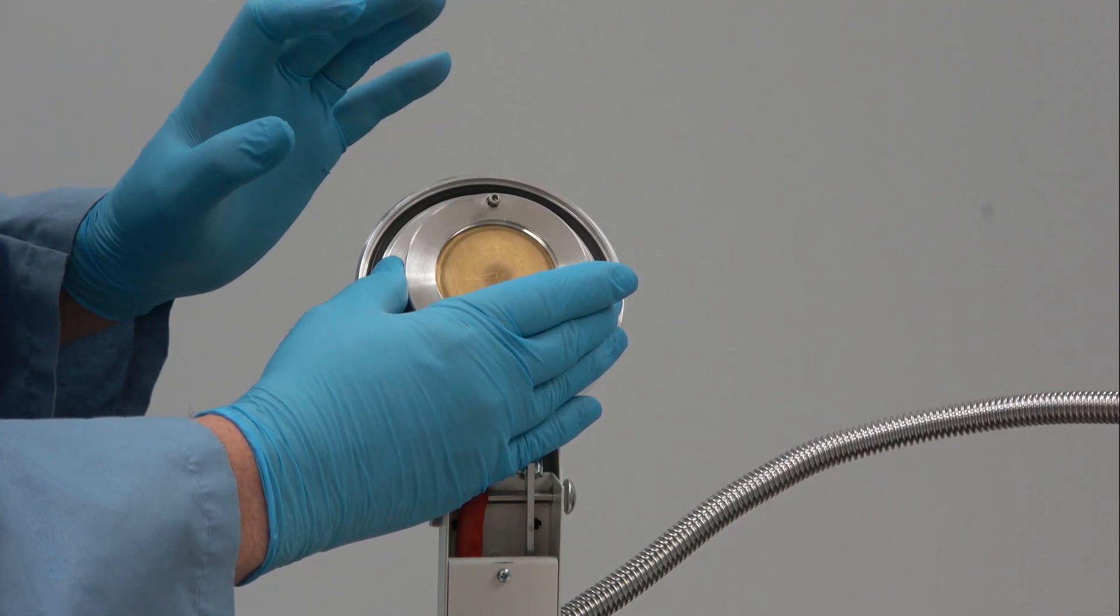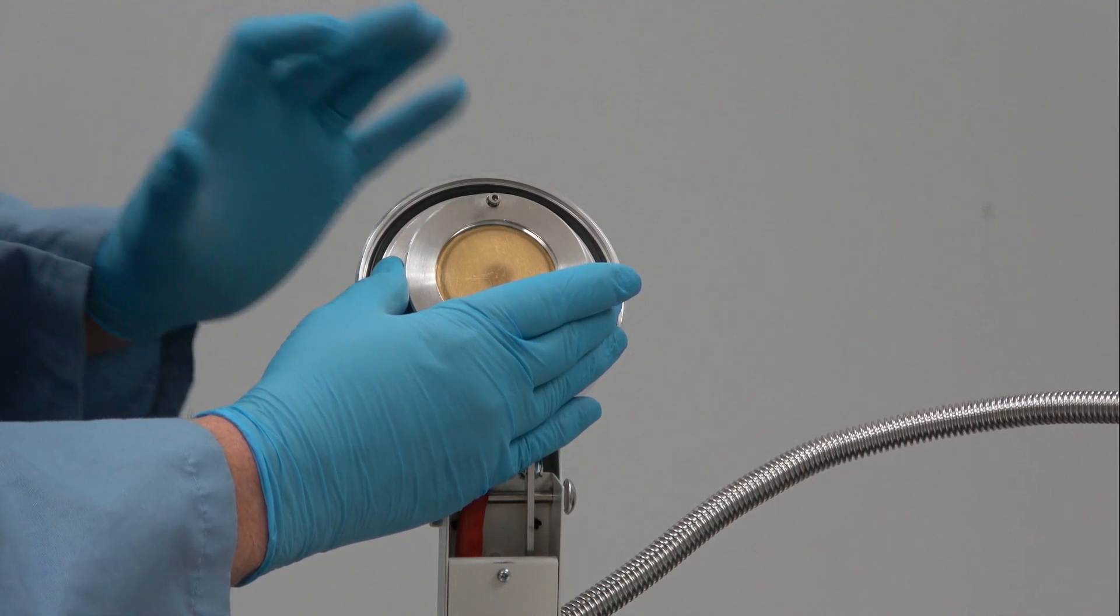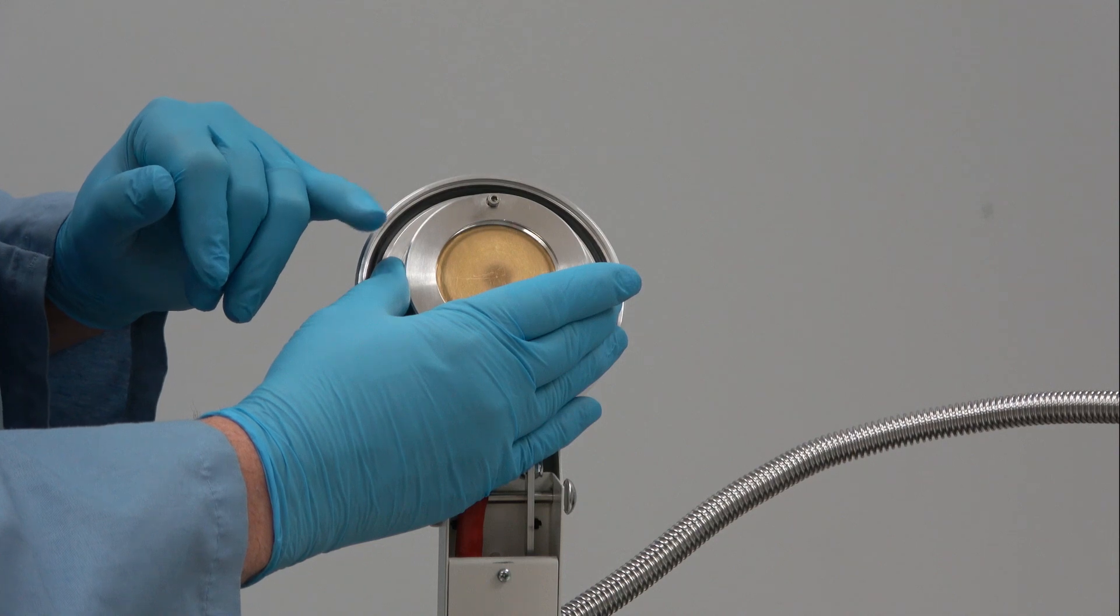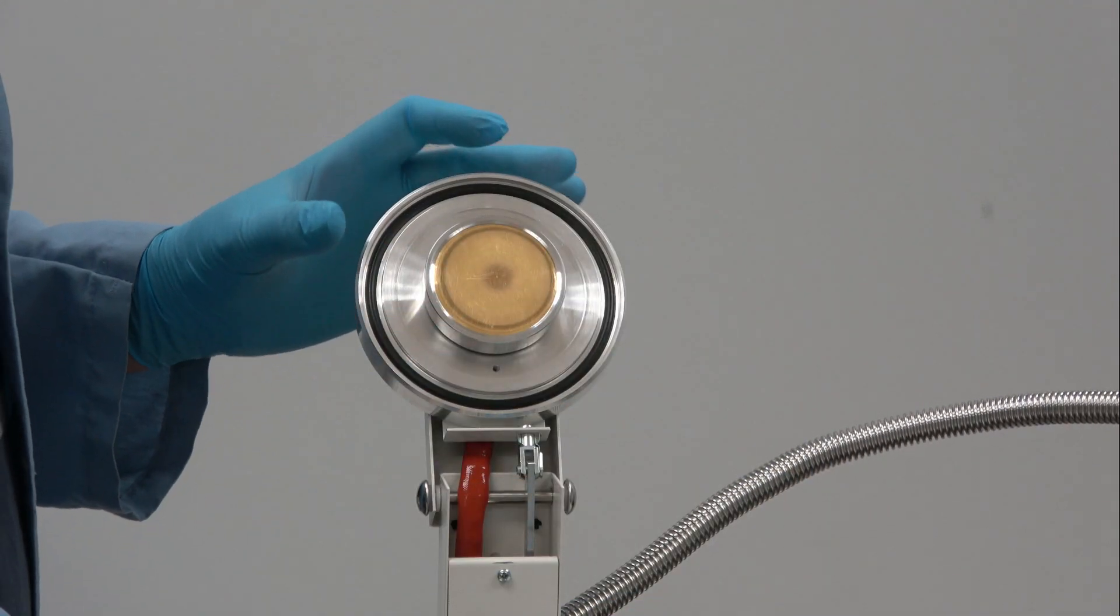So that's the correct installation of targets in the 7620. If you need to change the target, you just go through the same exact procedure.